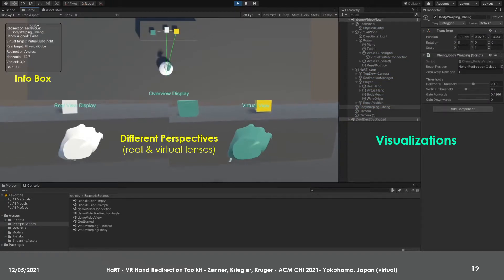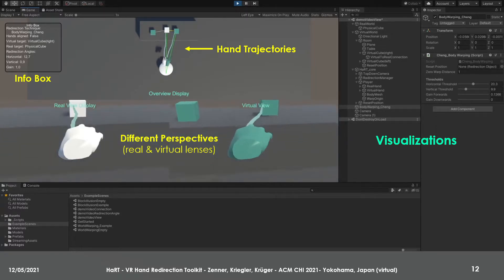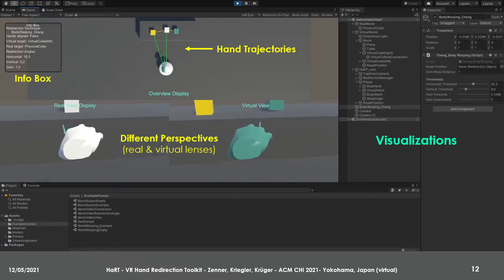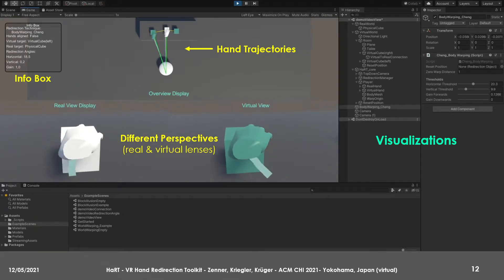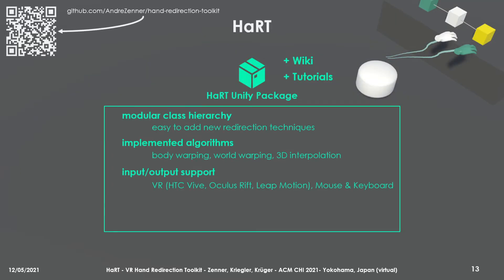Moreover, in the game view, users of the toolkit can see information about active redirections displayed in an info box, observe the scene through real and virtual lenses, and inspect hand trajectory renderings. All these functionalities are complemented by a basic logging system that collects redirection information for later analysis.